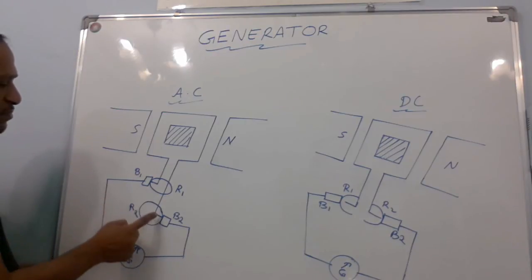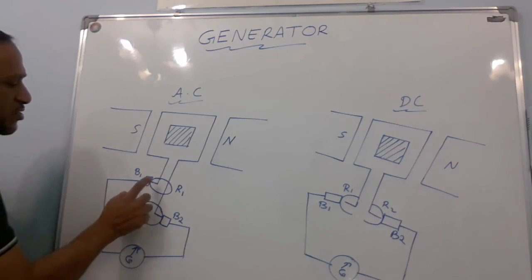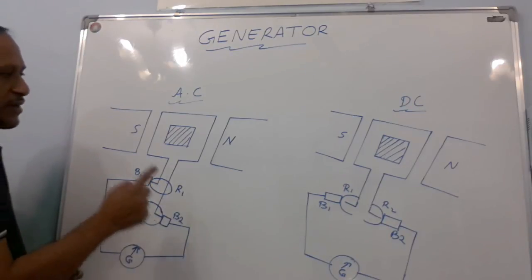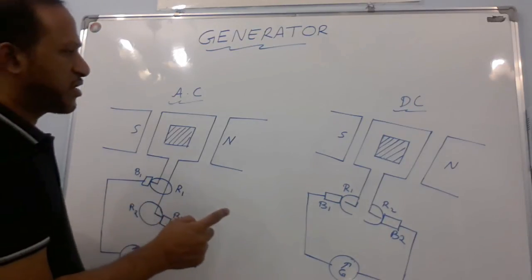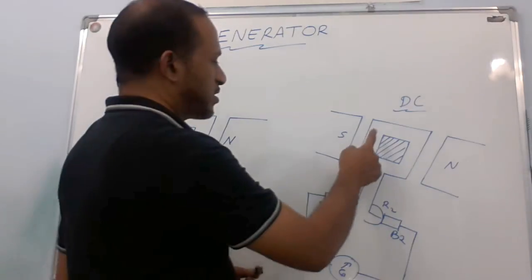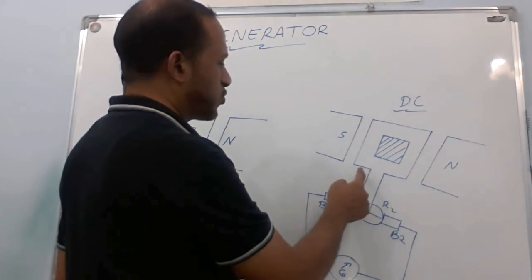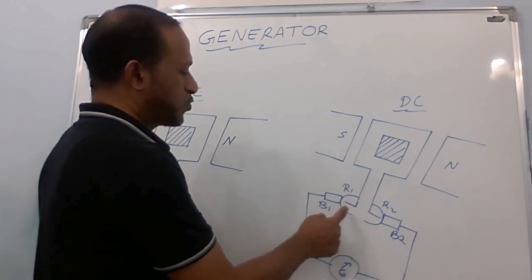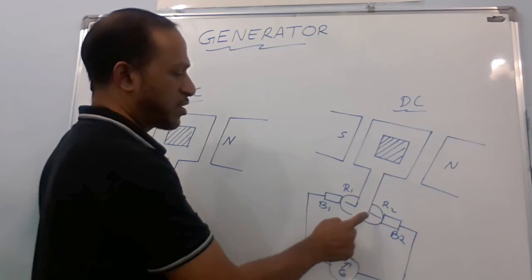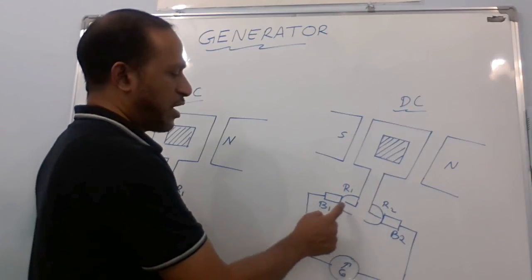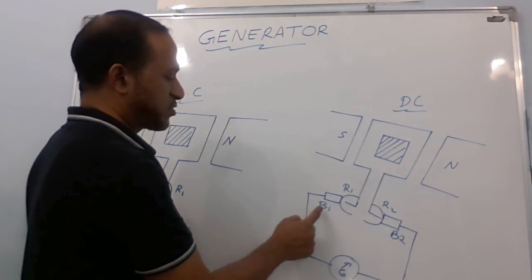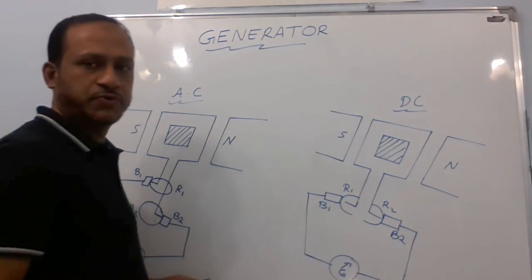In the case of a DC generator, the two ends of the armature wire are connected to two split rings R1 and R2, and those two split rings are always in contact with the two brushes B1 and B2.